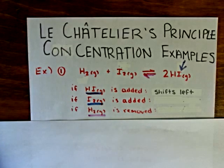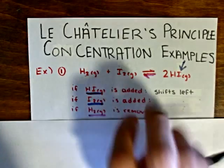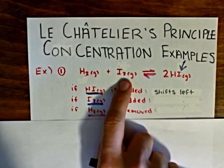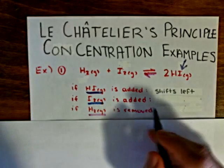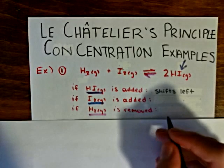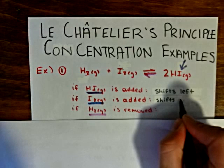And the system wants to maintain an equilibrium. So in order to maintain that equilibrium, the excess must be consumed. And in order to consume it, the equilibrium will turn that iodine into more of the product by reacting it with the hydrogen gas. Therefore, the equilibrium will shift to the right.